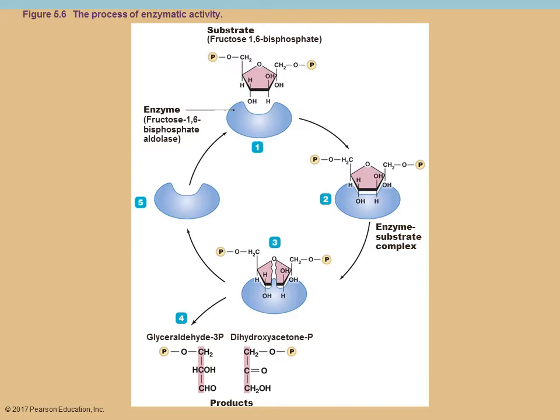Is the enzyme used up in the reaction? No — that's one of the properties of a catalyst. The substrate comes in and binds to the active site, causing a shape change. The reaction occurs — in this case breaking a larger compound into two smaller products. The products are released, and as they're released there's another shape change. The enzyme goes back to its original shape and can be reused over and over.